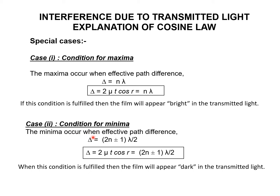The condition for minima: minima occurs when the optical path difference equals (2n − 1) times lambda by 2, so 2 mu T cos r equals (2n − 1) lambda by 2. If this condition is fulfilled, the film appears dark in transmitted light, whereas in reflected light, this same condition gives a bright film. Therefore, a film which appears bright in reflected light becomes dark in transmitted light, and a film which appears bright in transmitted light appears dark in reflected light — this is the complementary nature of transmitted and reflected light.